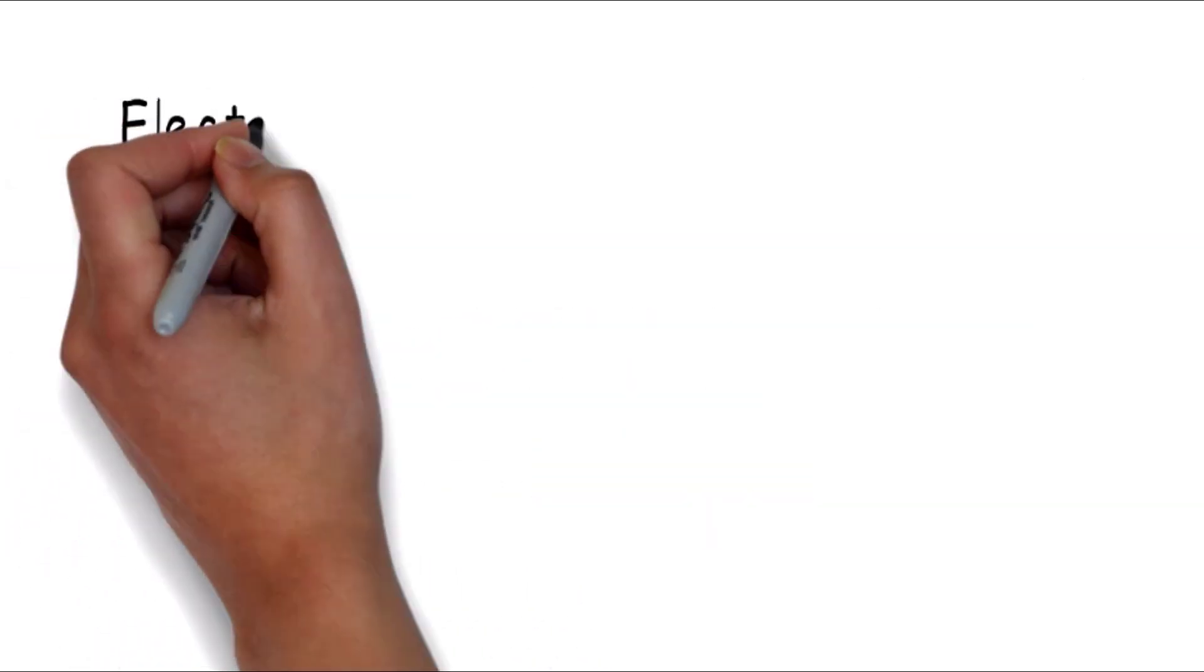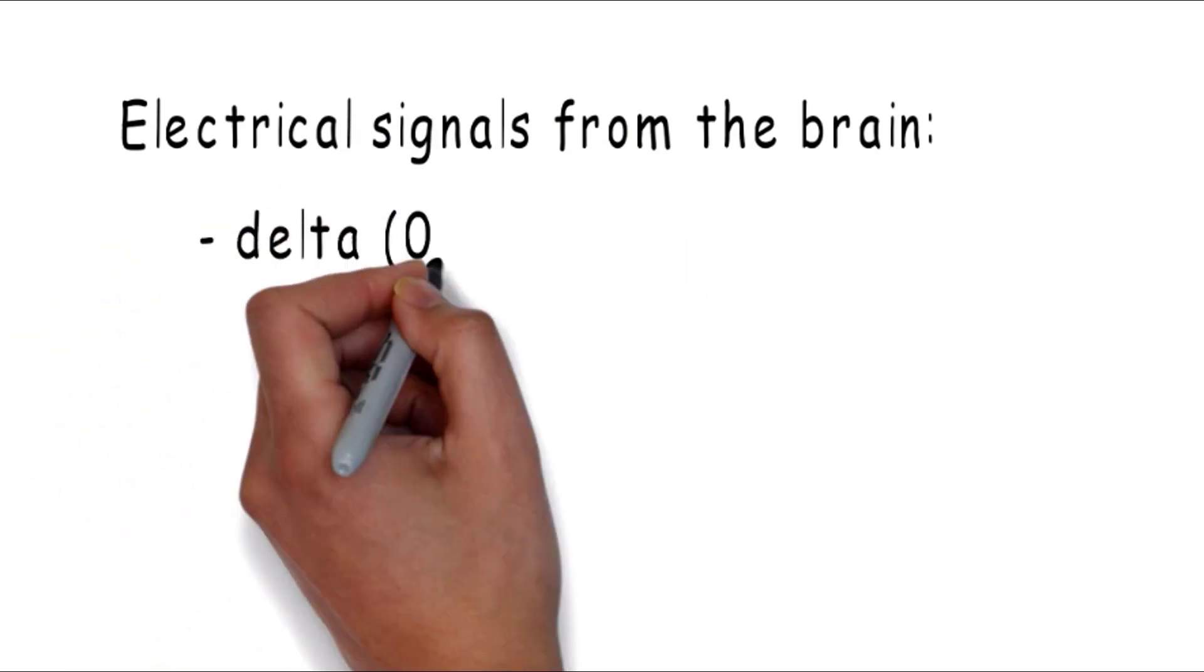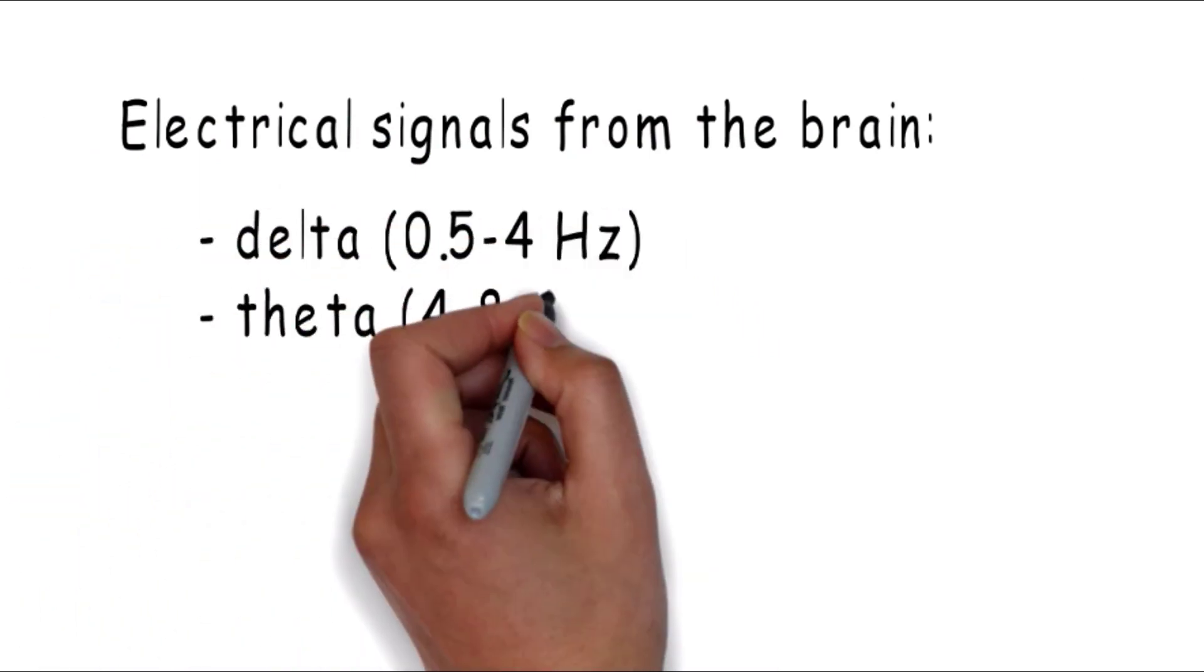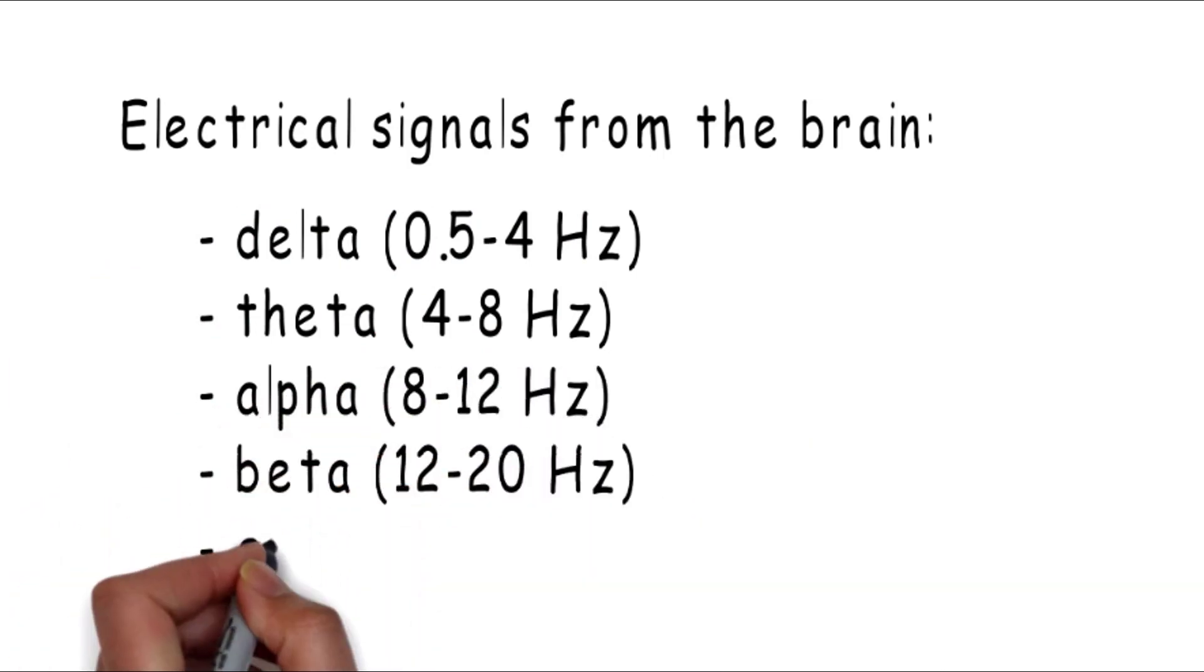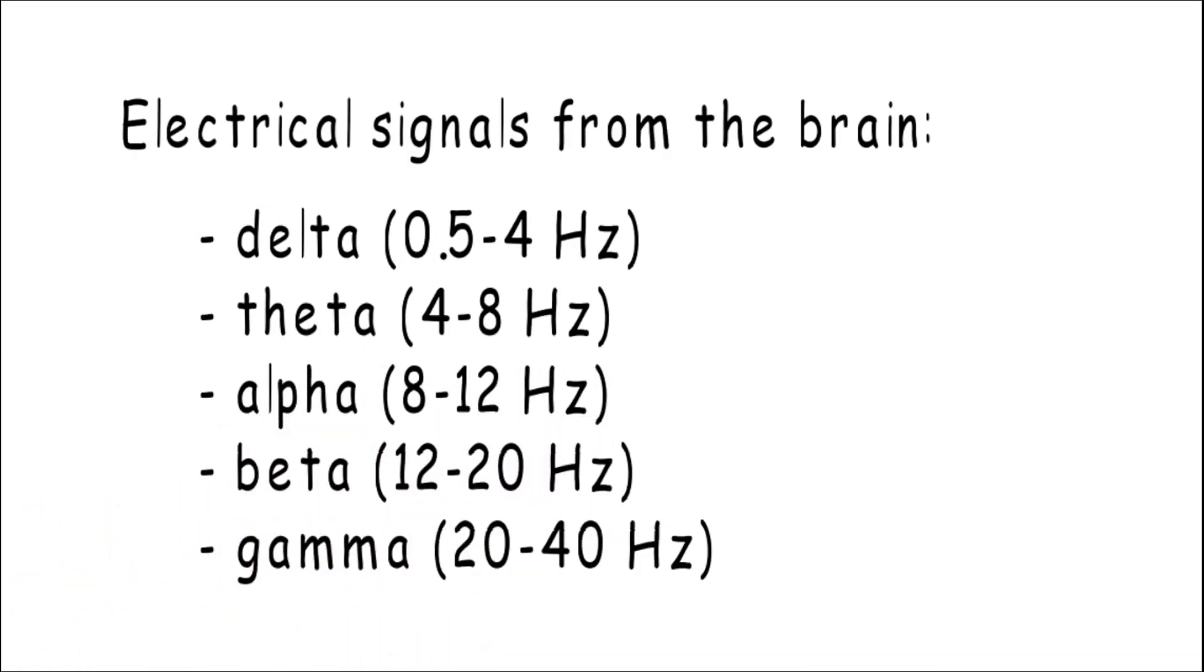Moving ahead to the first part of EEG which is electro, there are basically five types of brain waves named as delta, theta, alpha, beta, and gamma, having the frequency range of 0.5 to 40 Hertz.